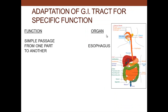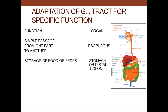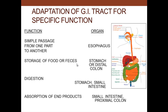The GI tract is adapted for specialized functions. The esophagus simply passes food from one portion to another. There is also storage of food and feces in the stomach or distal colon, so we don't have to eat or defecate all the time. Digestion occurs in the stomach and small intestines, and absorption of end products is largely in the small intestine but also the proximal colon. Different portions of the GI tract are specialized for different functions.